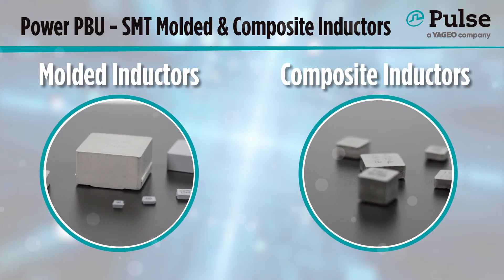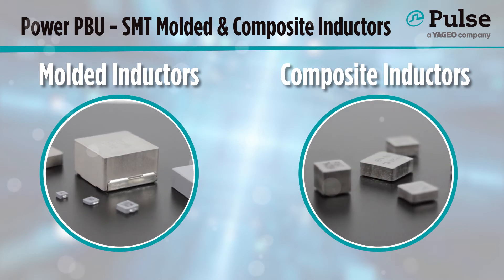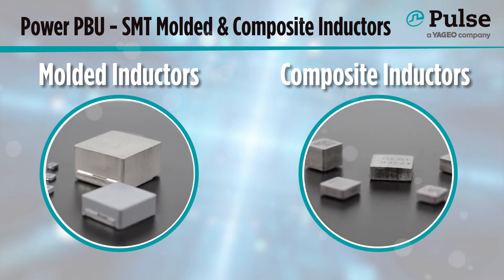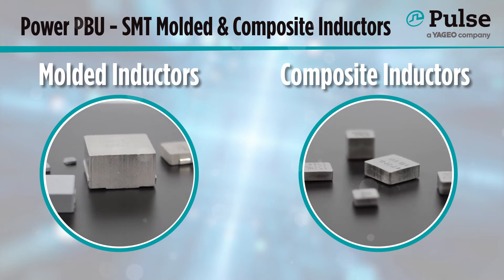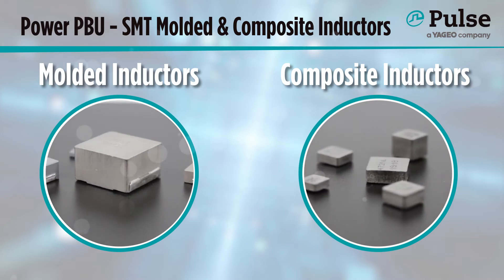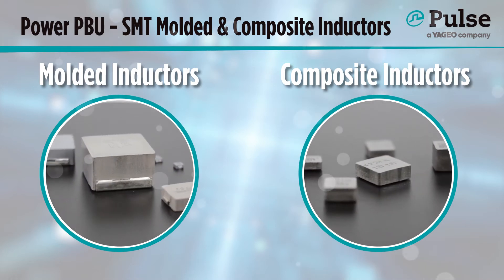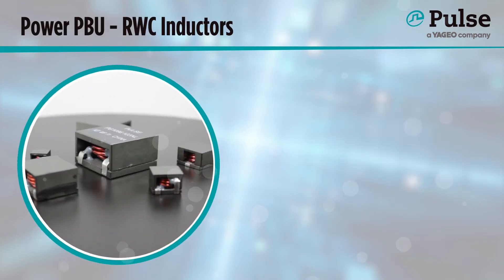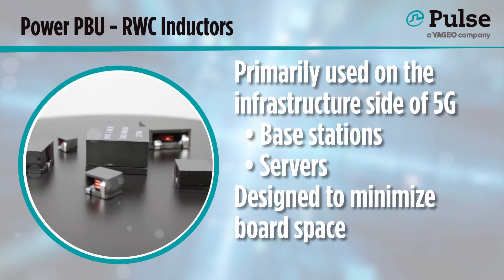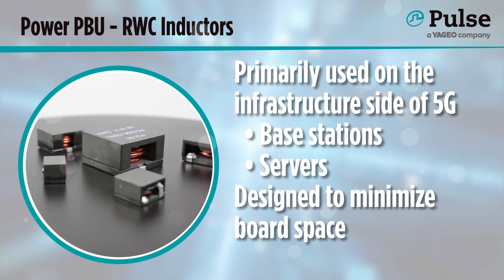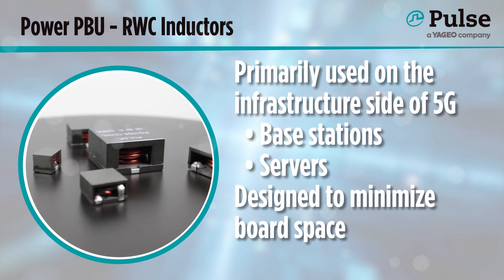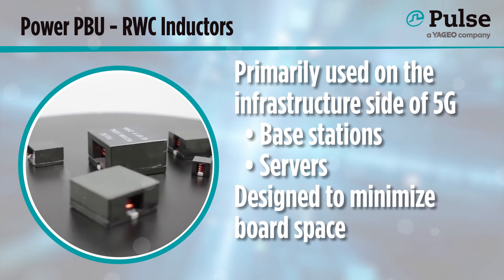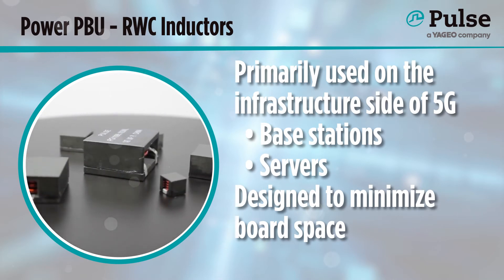Molded and composite inductors are used throughout the 5G system, in both user-side devices and within the 5G infrastructure, suitable for mid-range power needs and height-constrained applications. The magnetic core allows for soft saturation. Round wire coil inductors are primarily used on the infrastructure side of 5G, in base stations and servers. They are designed to minimize board space and the ferrite core construction maximizes circuit efficiency.